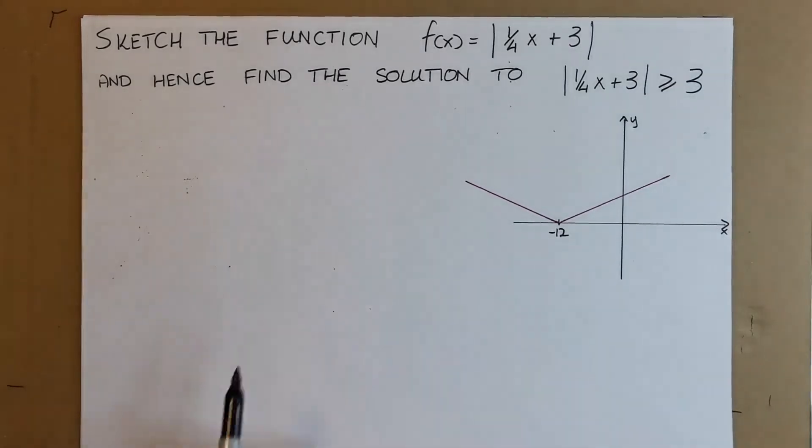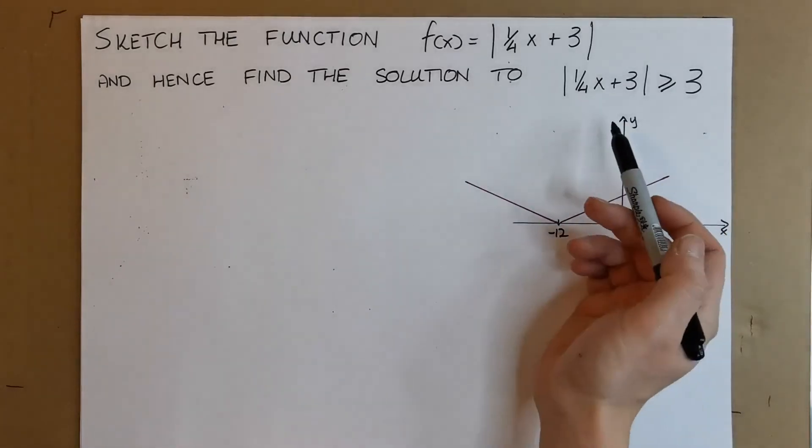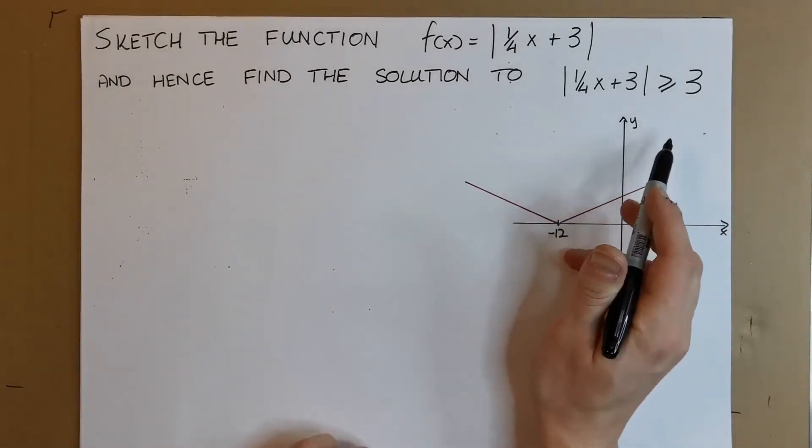The question asks us to sketch the function f(x) = |1/4x + 3| and hence find the solution to |1/4x + 3| ≥ 3.